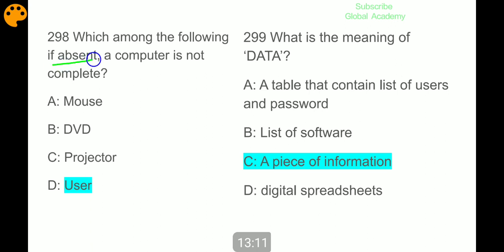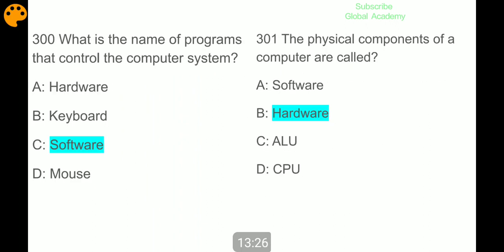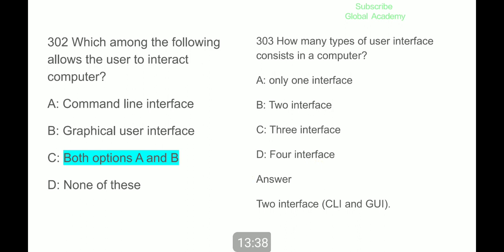Which among the following, if absent, a computer is not complete? User. What is the meaning of data? A piece of information. What is the name of programs that control the computer? System software. The physical components of a computer are called hardware. Which among the following allows the users to interact with computer? Both command line interface and graphical user interface. How many types of user interface consist in a computer? Two interfaces: CLI and GUI.